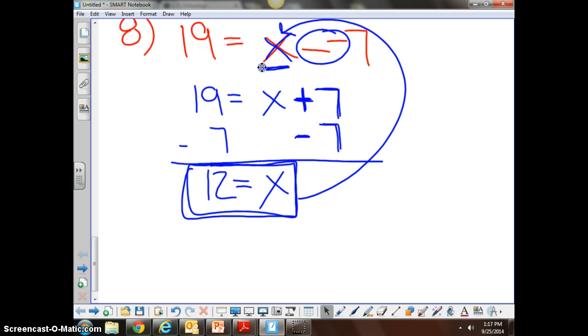Well, what is the problem? Here's the problem. The problem is in red. 19 equals x minus negative 7. Does that help you? Yes. Anything else that you need to see?